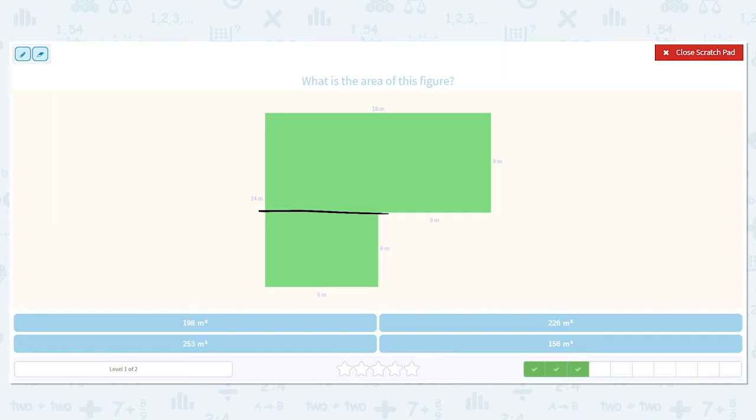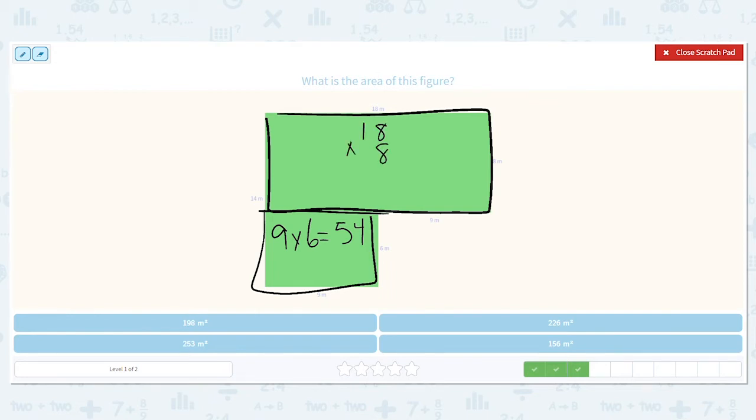You can cut it into either of the two rectangles. So my first rectangle is 9 times 6, which equals 54. My larger rectangle is 18 times 8. 8 times 8 is 64, put down the 4, carry the 6. 8 times 1 is 8, plus 6 is 14.